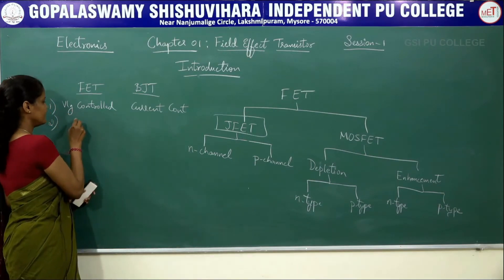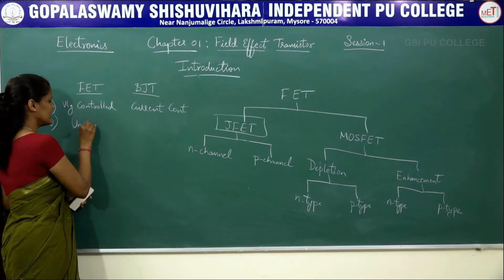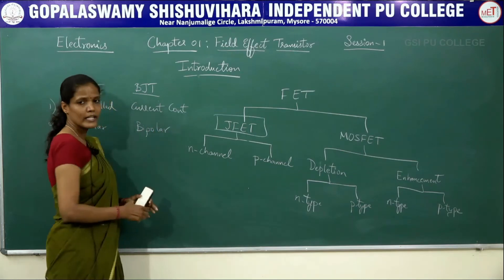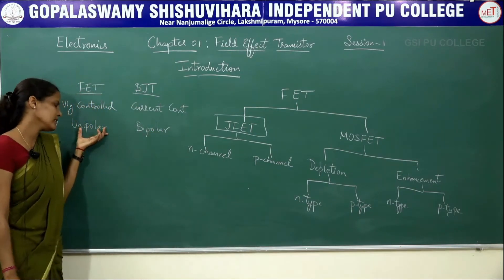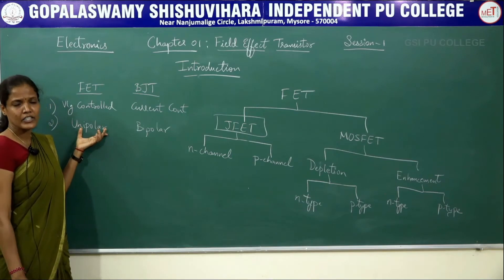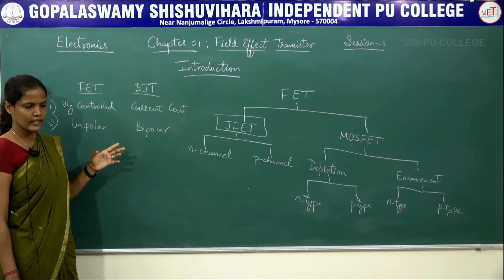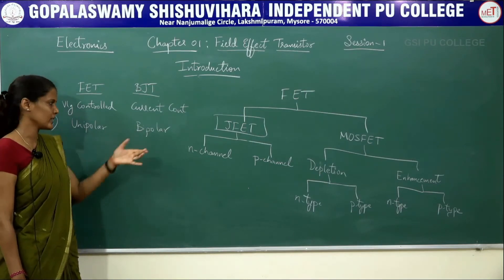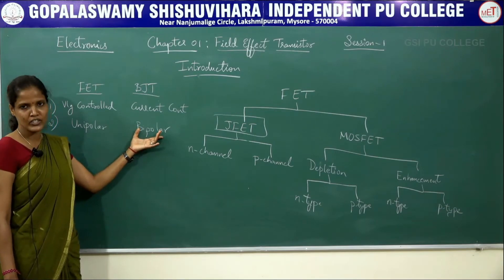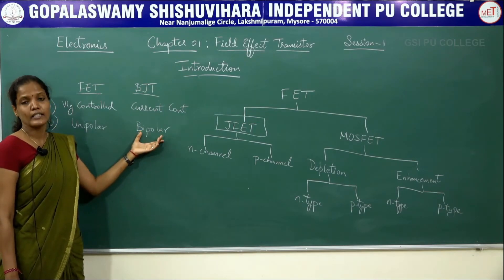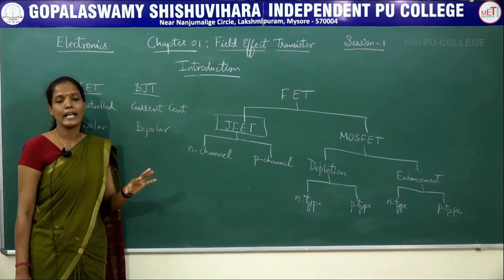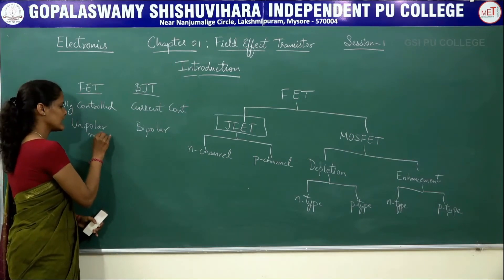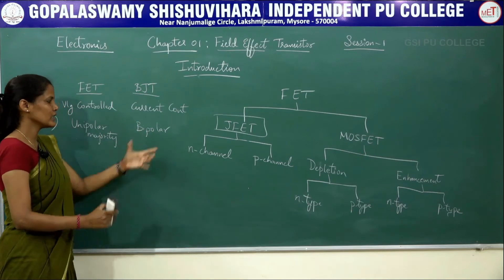The second difference is that FET is a unipolar device whereas BJT is a bipolar device. In a unipolar device, the current conduction is mainly due to the majority charge carriers, which can either be electrons or holes — only the majority charge carriers. In the bipolar junction transistor, the current conduction is due to both majority as well as minority charge carriers.